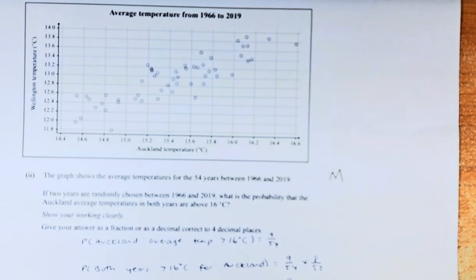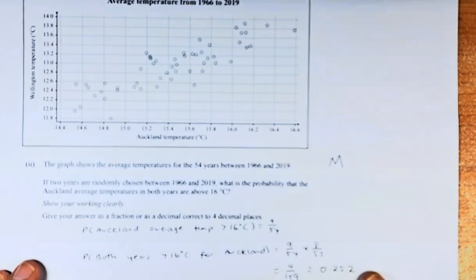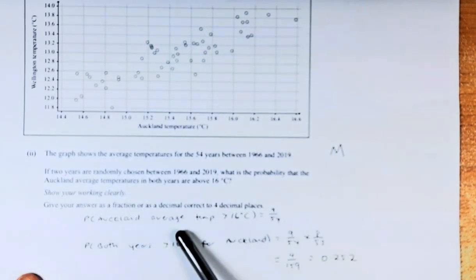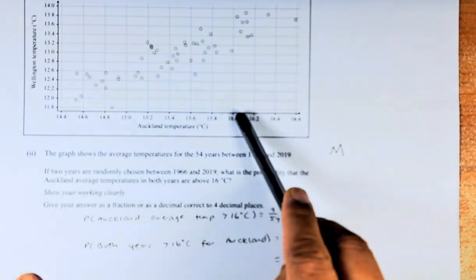So, the graph shows the average temperature for 54 years, as I said before, between 1966 to 2019. If 2 years are randomly chosen between 1966 and 2019, what is the probability that the Auckland average temperature in both years are above 16 degrees centigrade? First, we need to calculate what is the probability of finding the Auckland average temperature above 16. So in this case, above 16 is here.